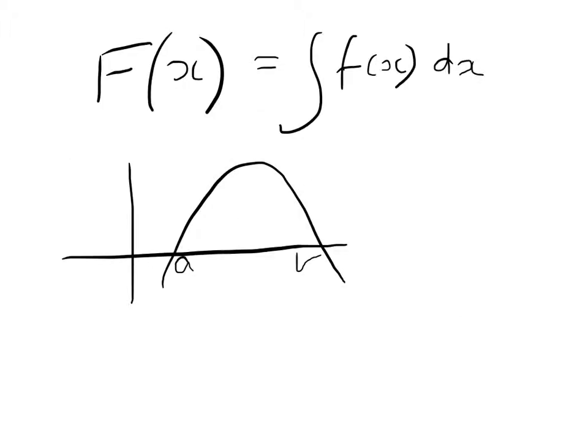Now this will throw up a constant of integration, but we can find the constant of integration by using the fact that F of the lowest possible value, which can't be less than the lowest possible value, will equal 0. So in examples that come later, you'll see me using that fact to find the constant of integration.